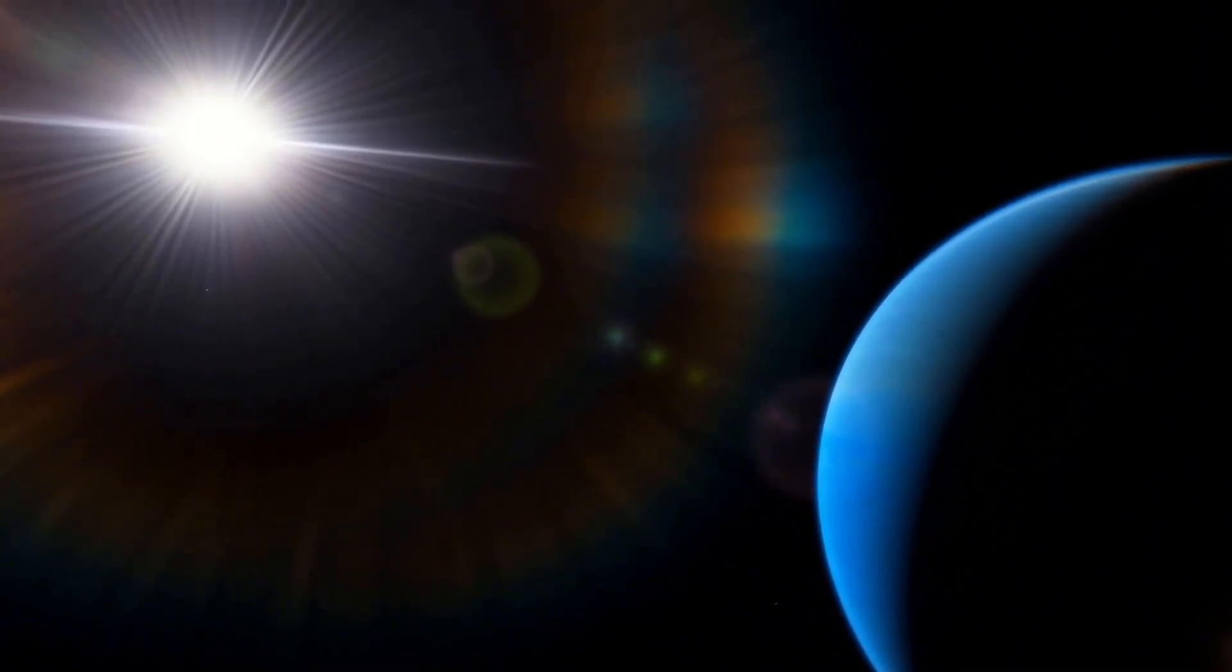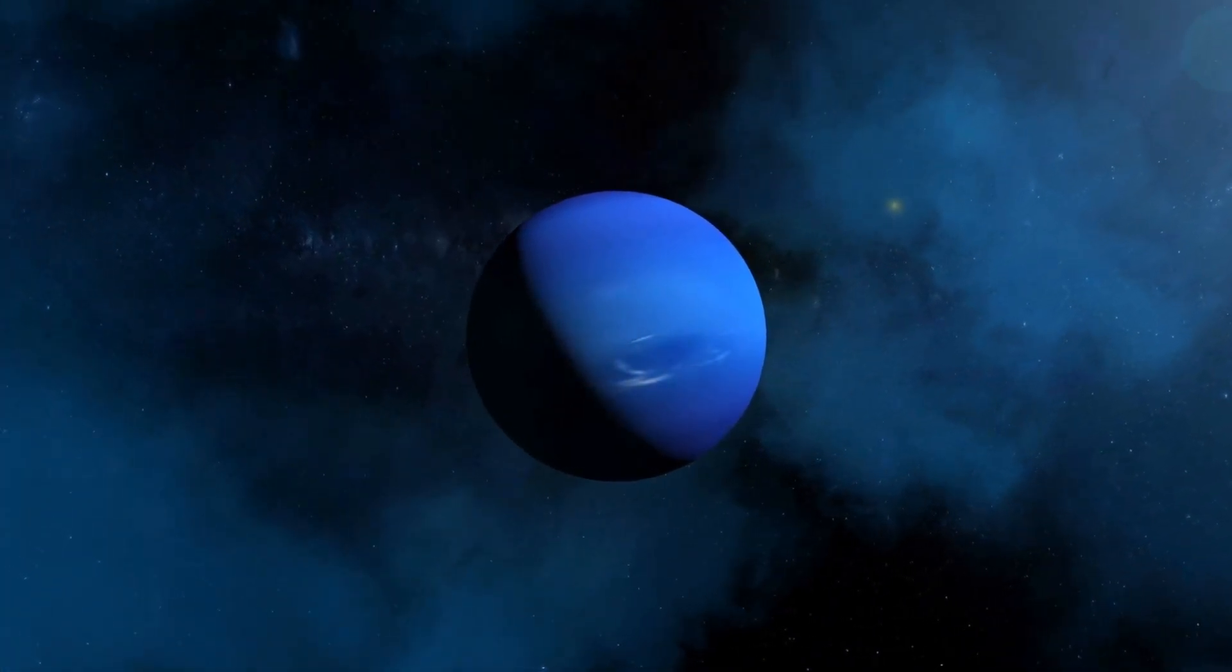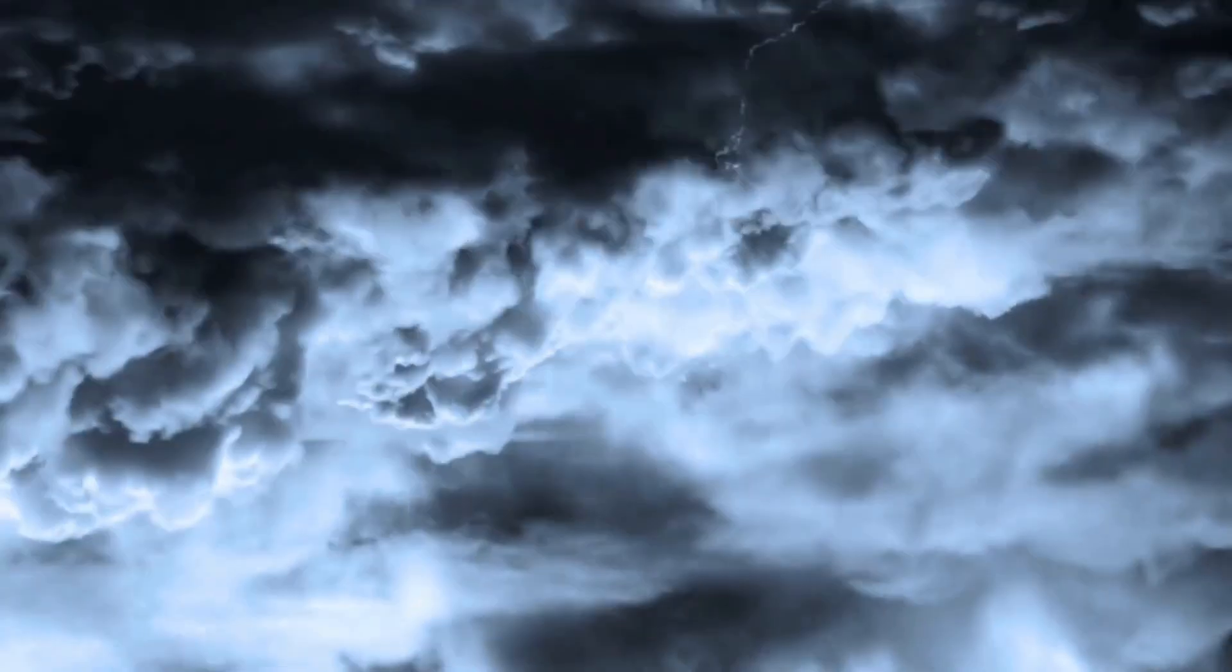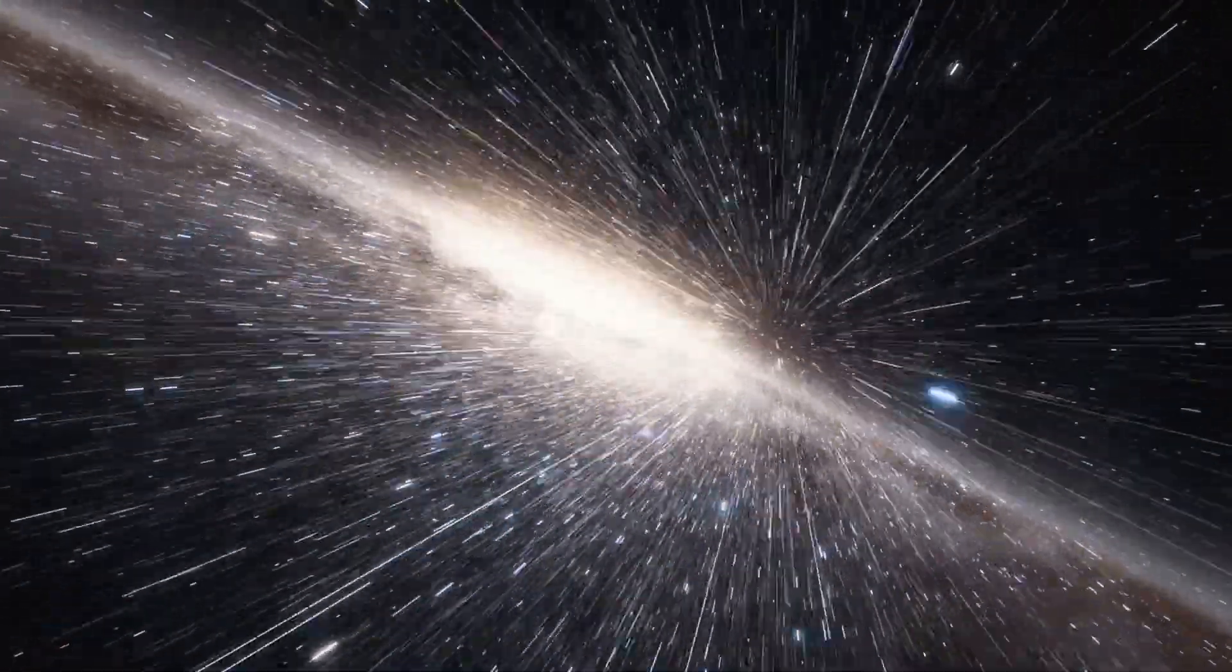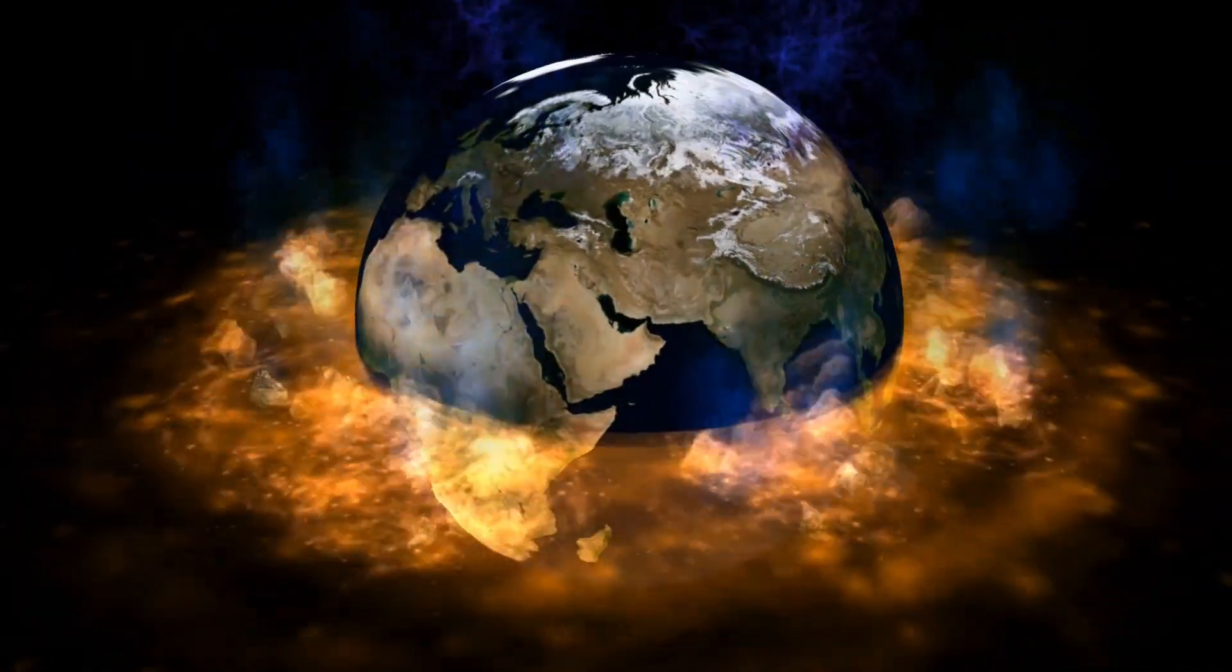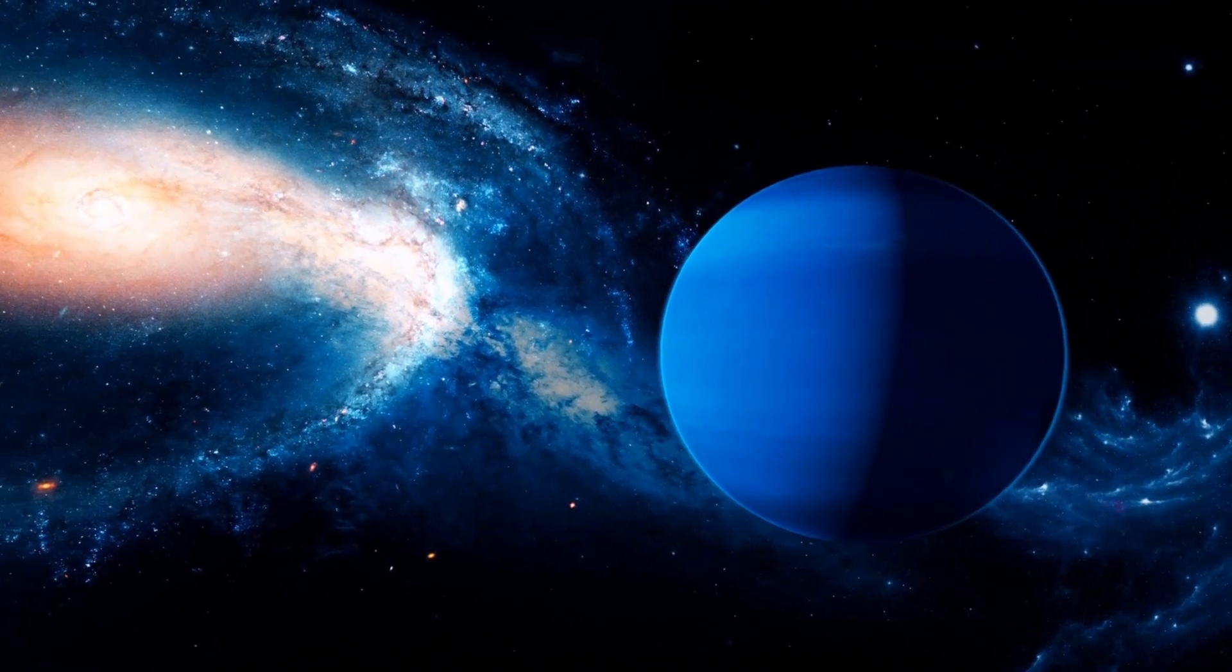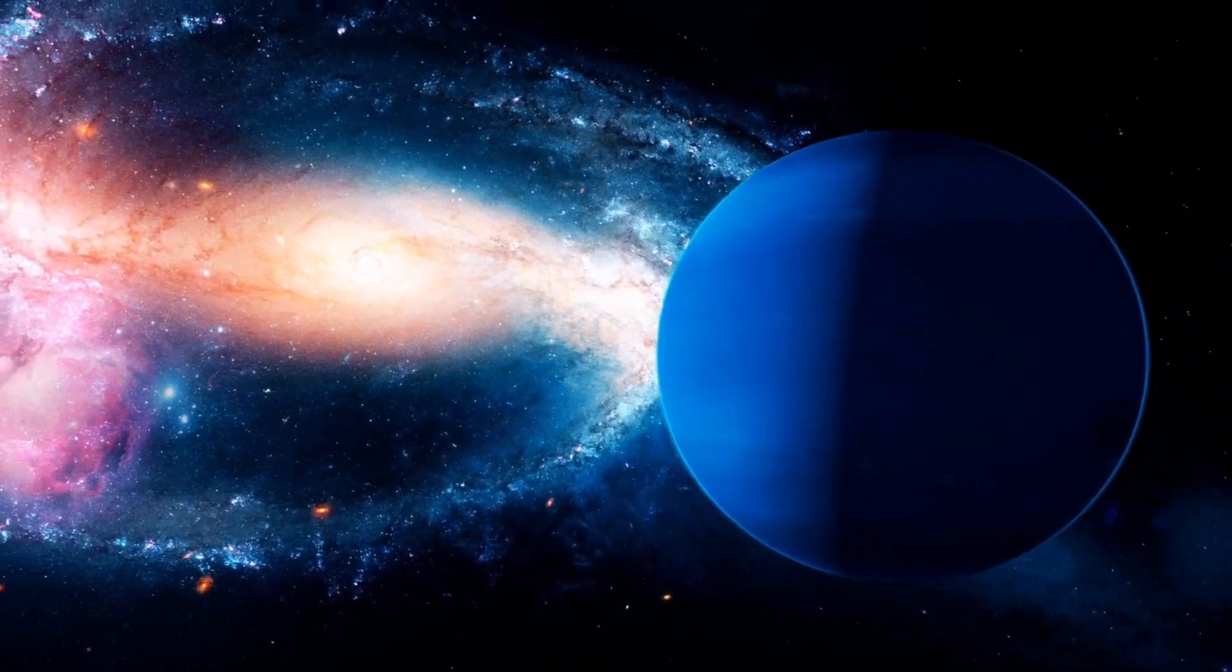This may also explain Neptune's extreme winds, the fastest in the entire solar system, clocking in at over 2,100 kilometers per hour, easily surpassing the speed of sound. On Earth, wind and weather are driven by solar energy, but on Neptune, where the Sun is little more than a bright star, another energy source must be at work. Tyson proposed that these gale-force winds may be driven from below by rising waves of internal heat and pressure changes, forming storms not because of sunlight but in spite of its absence.